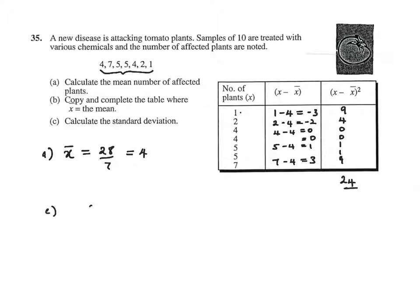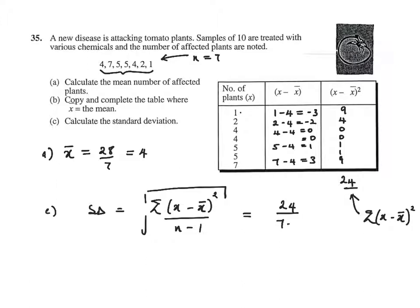Standard deviation: sigma, the square root of sigma (x minus x bar) squared over n minus 1. Now this here is sigma (x minus x bar) squared, and there are 7 numbers, so n is 7. It's 24 over 7 minus 1. 7 minus 1 is 6. 24 divided by 6 is 4, and the square root of 4 is 2.